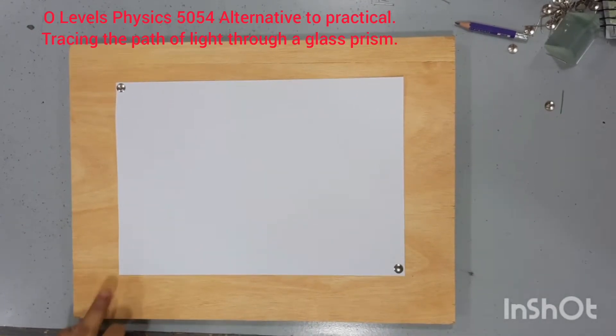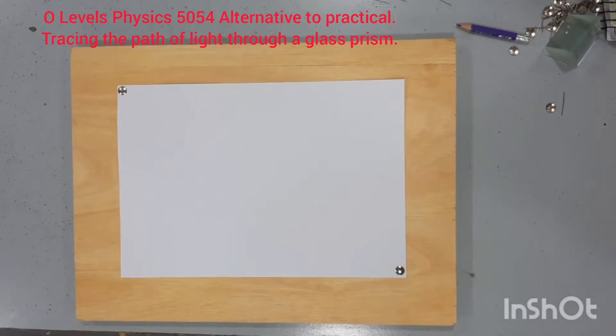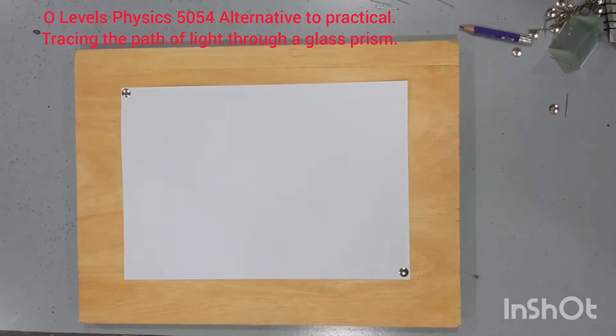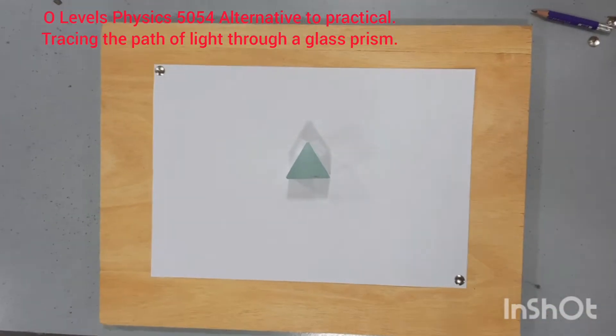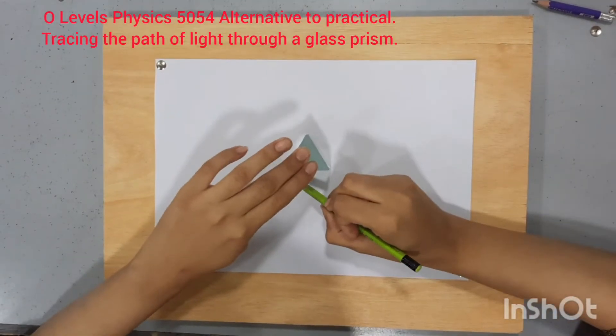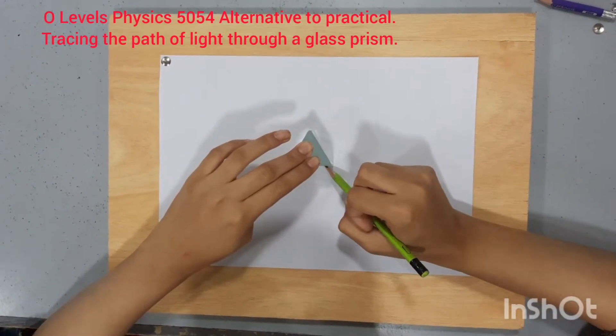The first step is to fix a white paper on a drawing board. Place the prism on the white paper and mark its boundary.